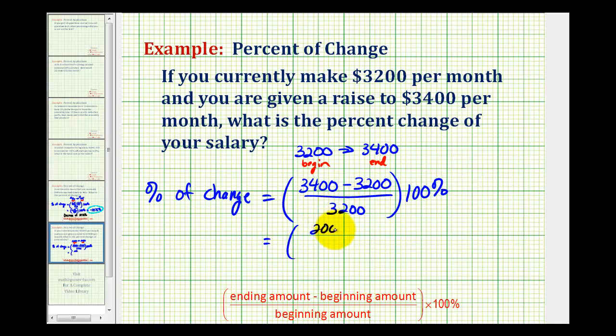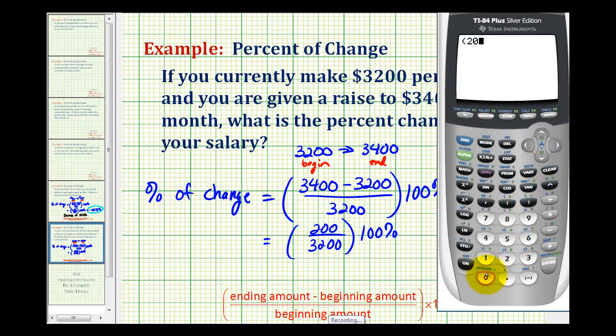So we're going to have 200 divided by 3,200 times 100 percent. And we'll go ahead and evaluate this on the calculator. So we'll have 200 divided by 3,200.